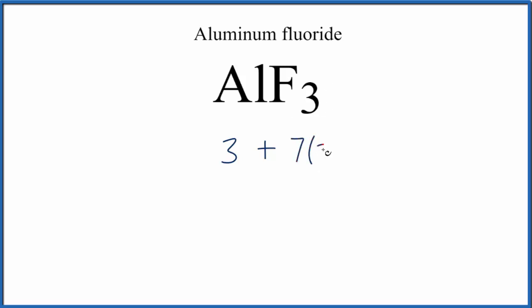And we have three fluorines here, we'll multiply by 3. So 3 plus 21, we have a total of 24 valence electrons for the AlF3 Lewis structure.